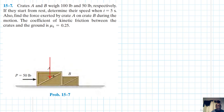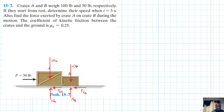Let's draw the free body diagram. We have the weight for each crate, the normal forces NA and NB, and friction forces FkA and FkB. We label the weight of crate A as WA and crate B as WB.